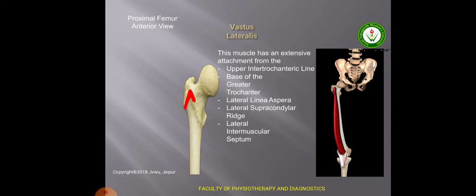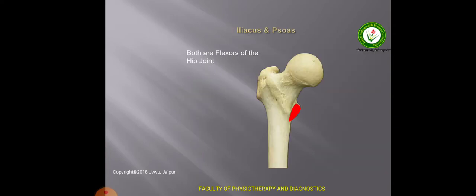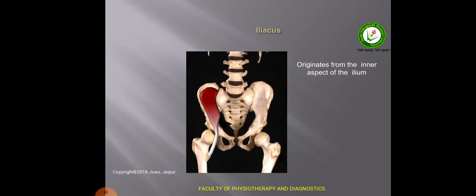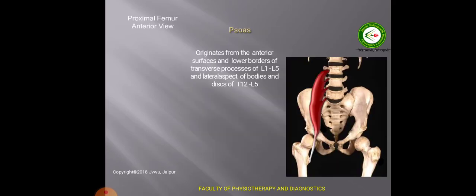The vastus lateralis is a muscle of the front of the thigh forming the lateral bulk of the thigh. The muscles on the lesser trochanter are the iliacus and the psoas major — both are flexors of the hip joint. The iliacus muscle arises from the iliac fossa of the hip bone and inserts on the lesser trochanter. The psoas major muscle arises from the lumbar vertebrae — from the lower borders of the transverse processes of L1 to L5, and the lateral aspects of the bodies and discs of T12 to L5 — and inserts on the lesser trochanter. It is a flexor of the hip joint.